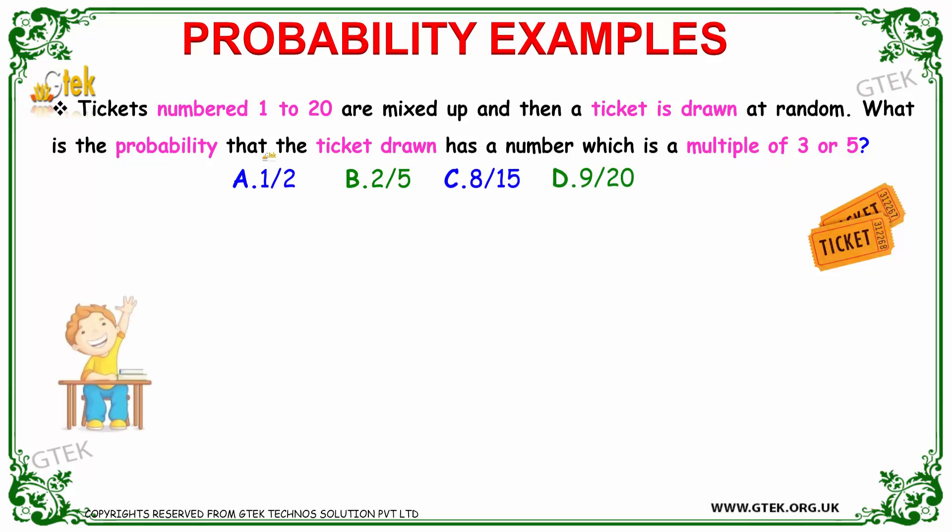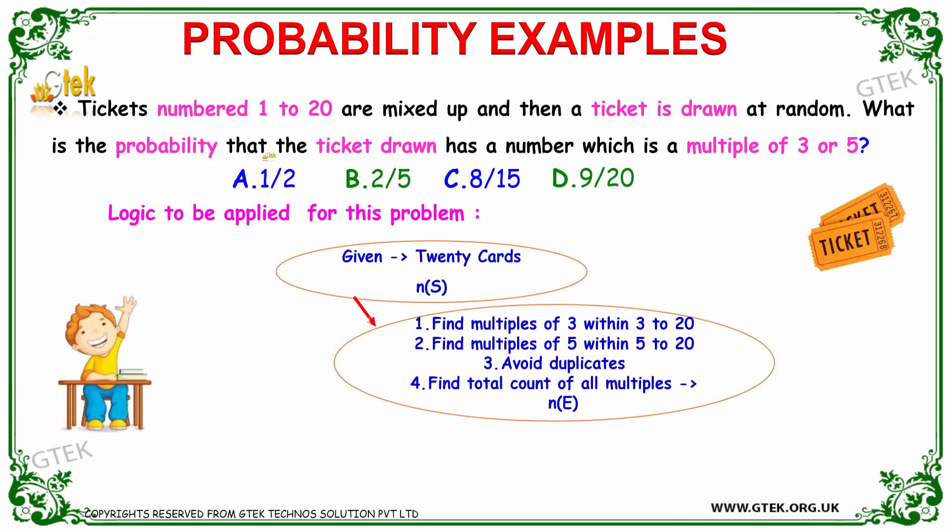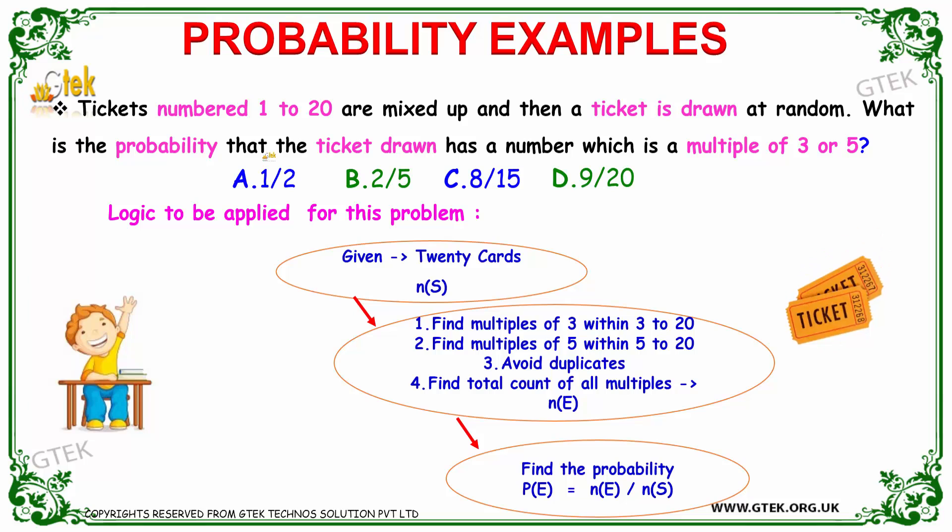Now let's move to the next problem. Tickets numbered 1 to 20 are mixed up, and then a ticket is drawn at random. What is the probability that the ticket drawn has a number which is a multiple of 3 or 5? There are 20 cards numbered 1 to 20.